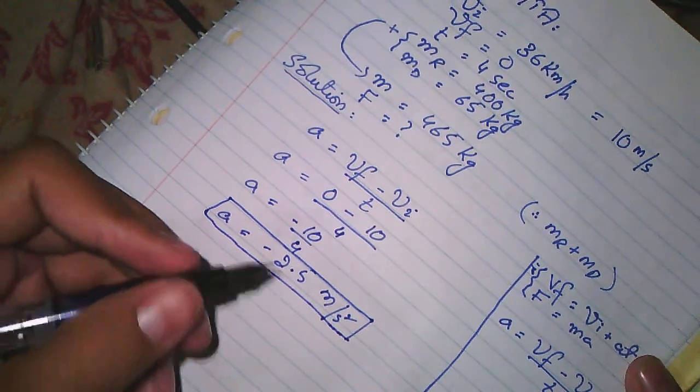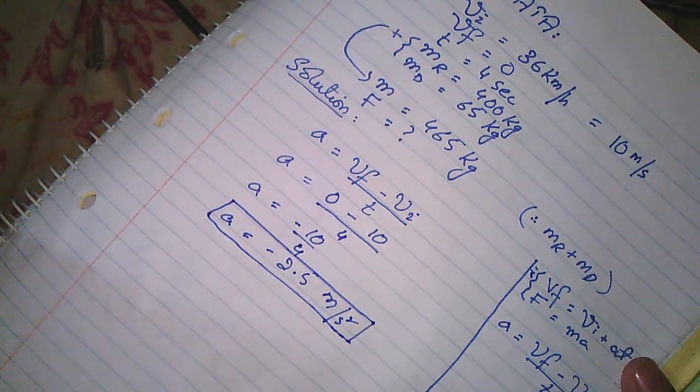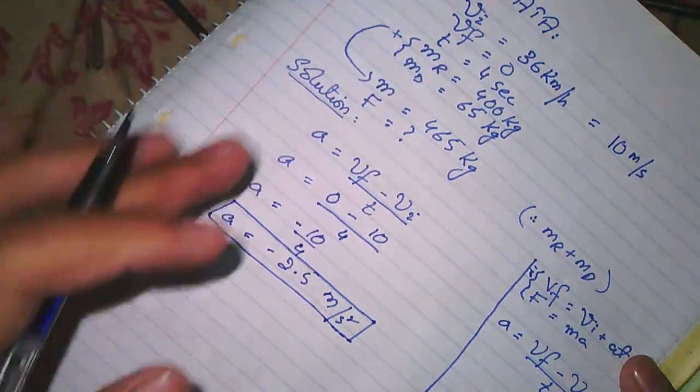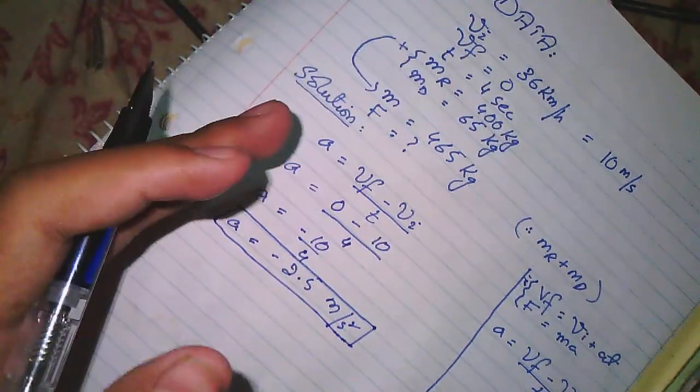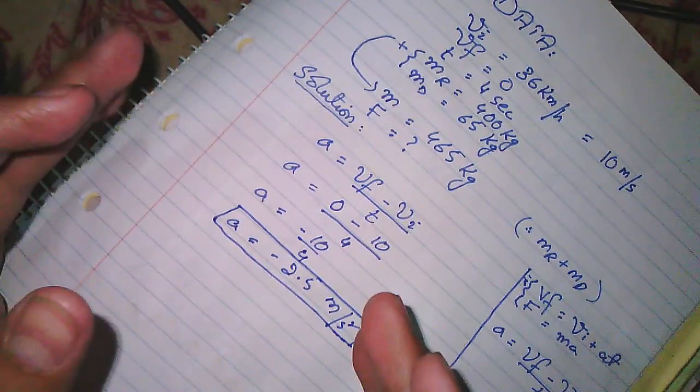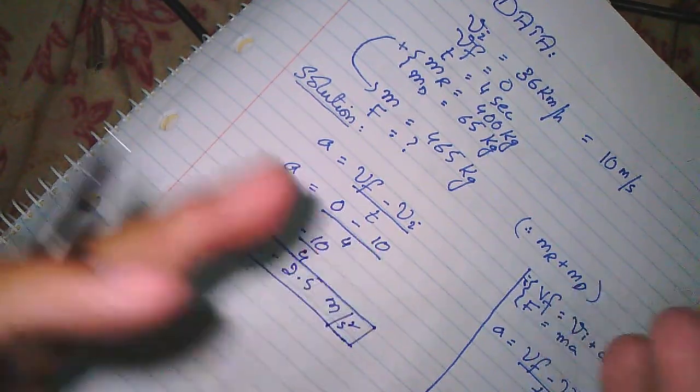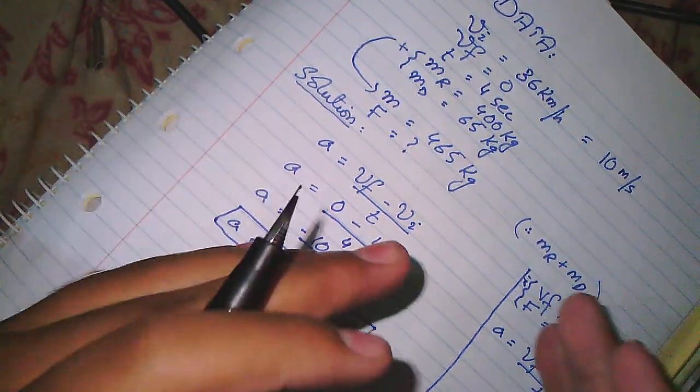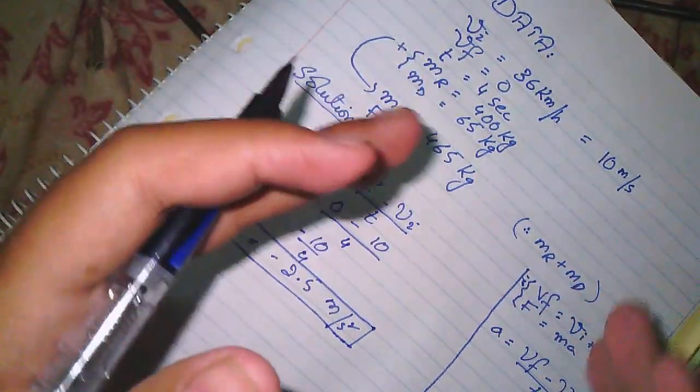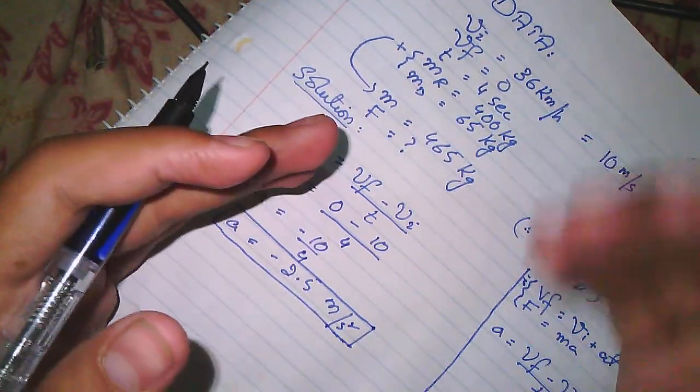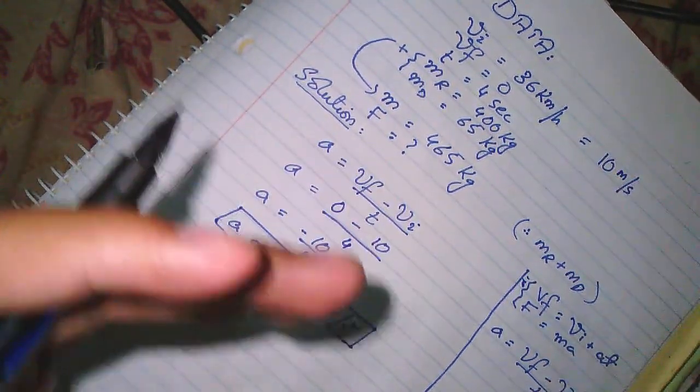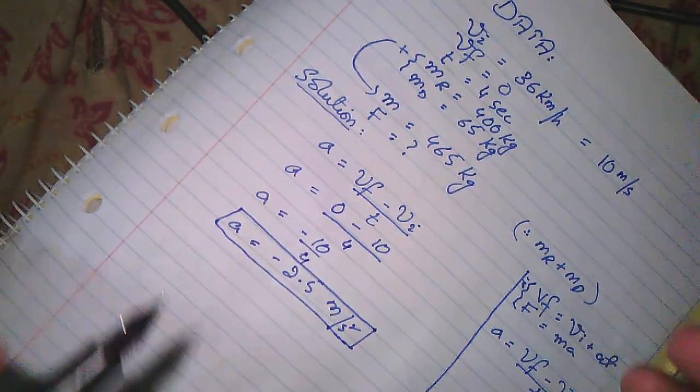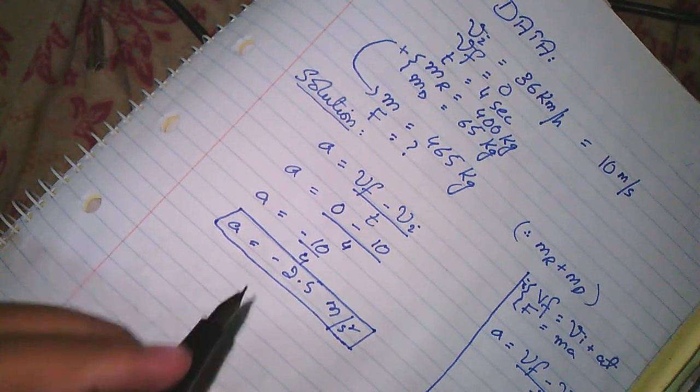This is acceleration. Negative acceleration is because we want to reduce from initial velocity to final velocity using brake. Acceleration negative simply means retarding force.